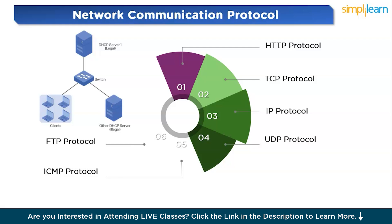Next is UDP — User Datagram Protocol. UDP is a connectionless protocol that transmits data without ensuring delivery or order. It is a fast protocol useful for real-time applications where speed is more critical than reliability. UDP sends data packets without establishing a connection, has no retransmission of lost packets, and reduces latency by avoiding handshake mechanisms. Online gaming and live streaming use UDP to maintain low latency, and even if some packets are lost, it doesn't significantly impact the experience.